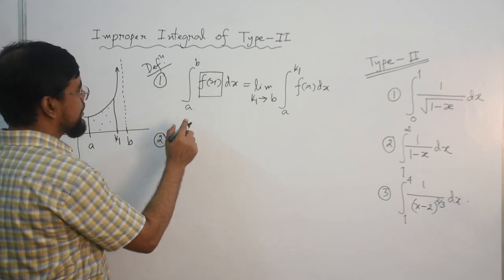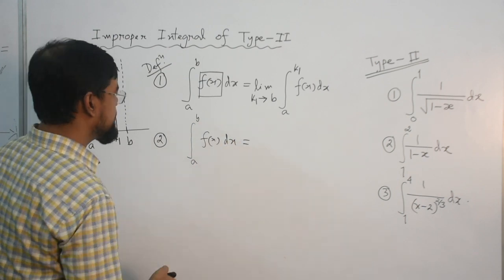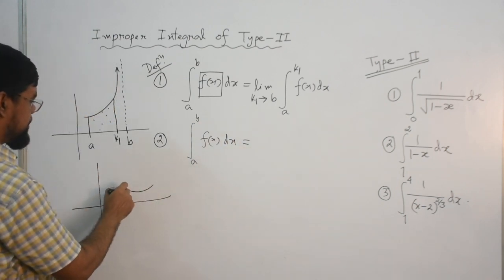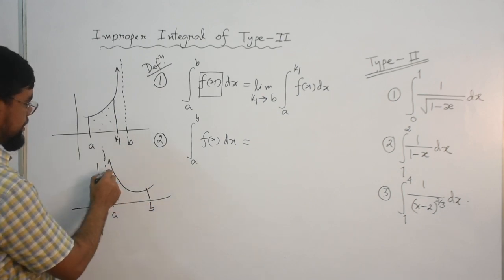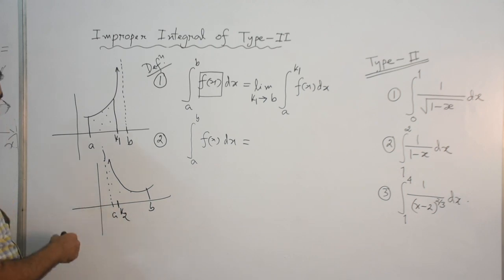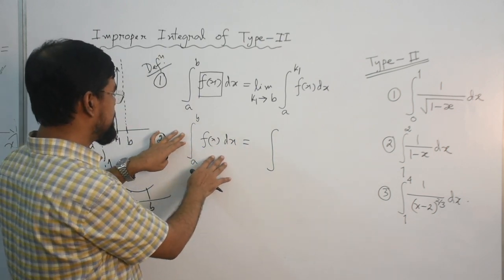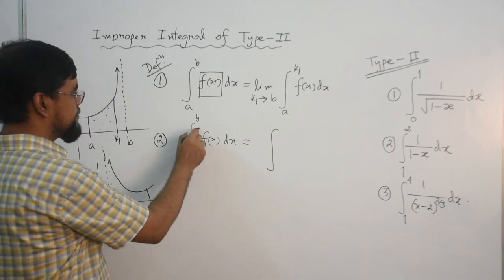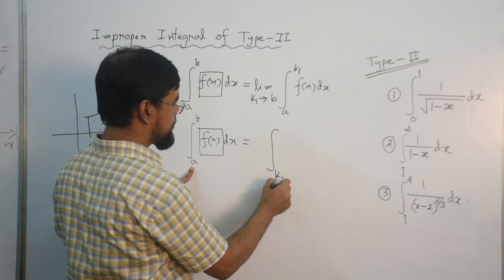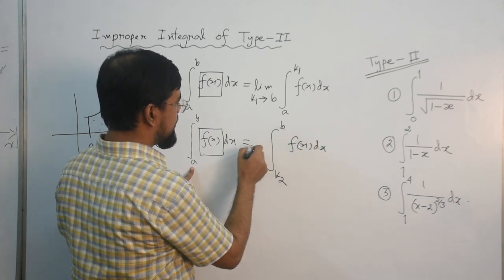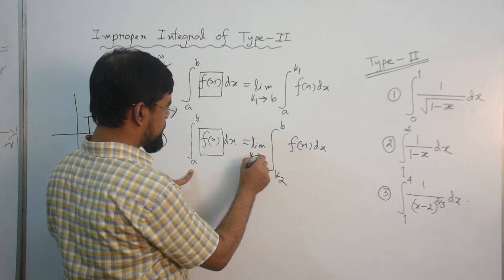Second definition: consider the integral from a to b of f(x) dx. Again this integral is improper because the integrand is infinity at its lower limit. You need to consider a finite number k2 which is approximate to a. To make this integral proper, you replace a by k2, because f(x) becomes infinity at the lower limit. The relation between k2 and a is that k2 is approximate to a.